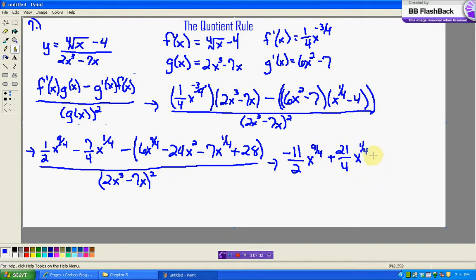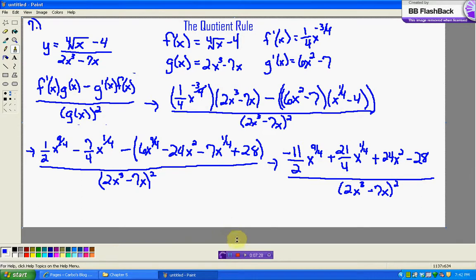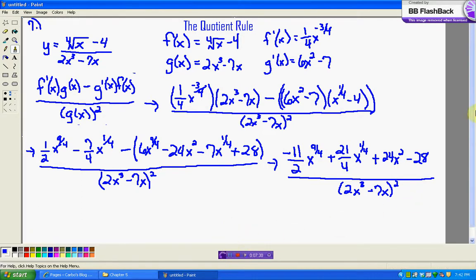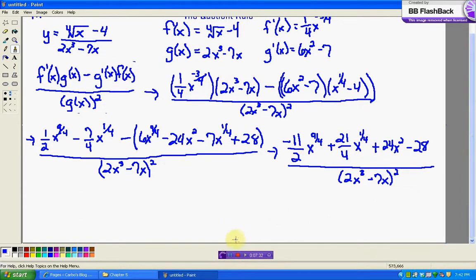Then, we have plus 24x squared minus 28. If you don't know where those signs came from, if you look over here, I distribute the negative. And, I get all that divided by our 2x cubed minus 7x squared. That looks pretty. Can I make this a little bit bigger here? Maybe I can work down.